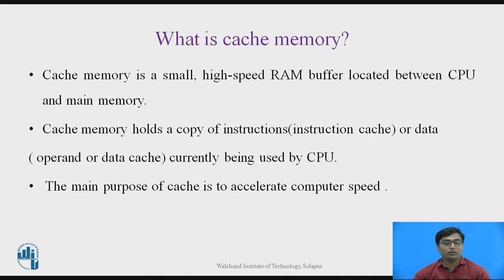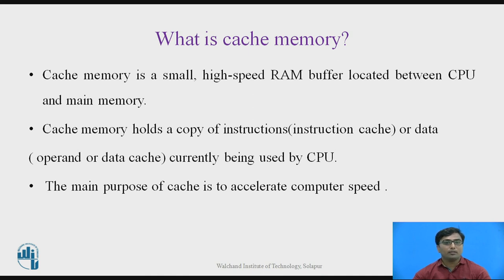We are already familiar with the basic concept of Memory. While executing a program, that program is loaded from secondary memory to the Main Memory. After loading to the Main Memory, the CPU will access those instructions from Main Memory and execute them. The instructions which are currently being used are loaded into Cache Memory. Cache Memory holds a copy of the instructions currently being executed. When those instructions are repeatedly used, they are accessed from the Cache Memory only.